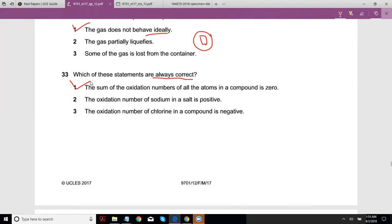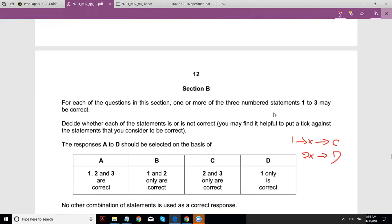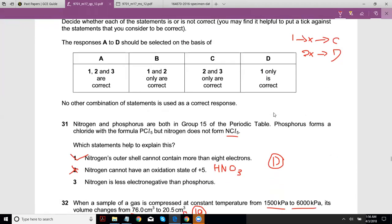So this should be correct. The oxidation number of sodium in a salt is always positive - I think that's right, Group 1 metal. The oxidation number of chlorine in a compound is not always negative because chlorine can be, we just saw this in this paper, plus three, plus five. So one and two, right? Should be B.